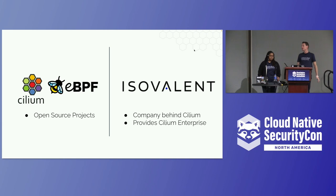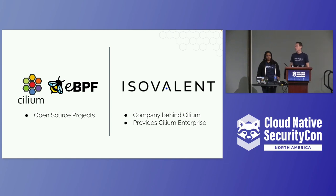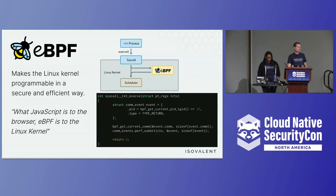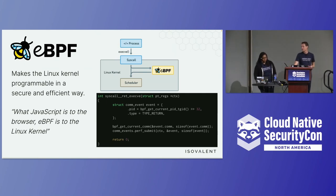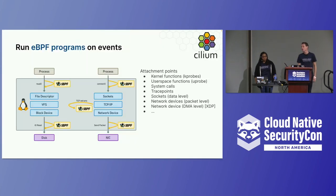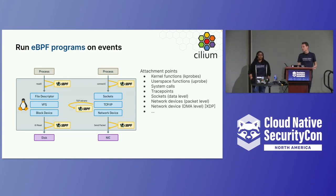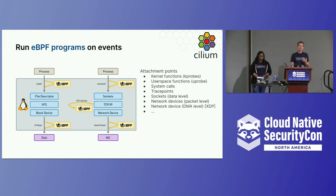We're from Isovalent — the originators of Cilium. We invented Cilium and donated it to the community, and it's widely used across multiple environments. Cilium is based on eBPF. eBPF is to the kernel what JavaScript is to the browser — it makes the kernel programmable in a very efficient way without actually changing it. It runs on kernel events: process opening a socket, a network device sending a packet — we attach eBPF programs to those events to expose metrics, identities, and observe flows.